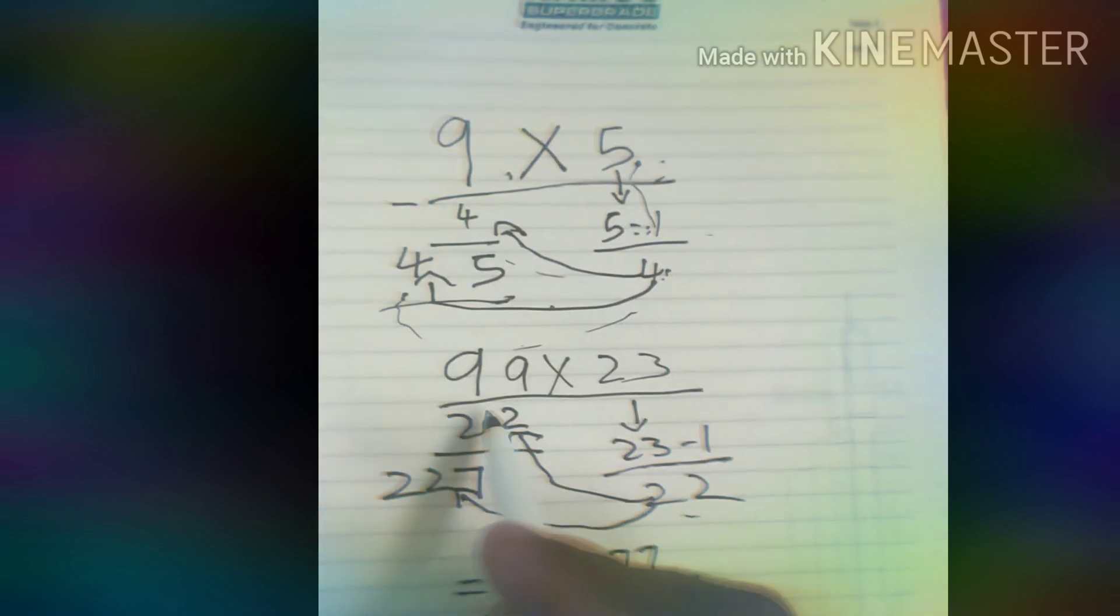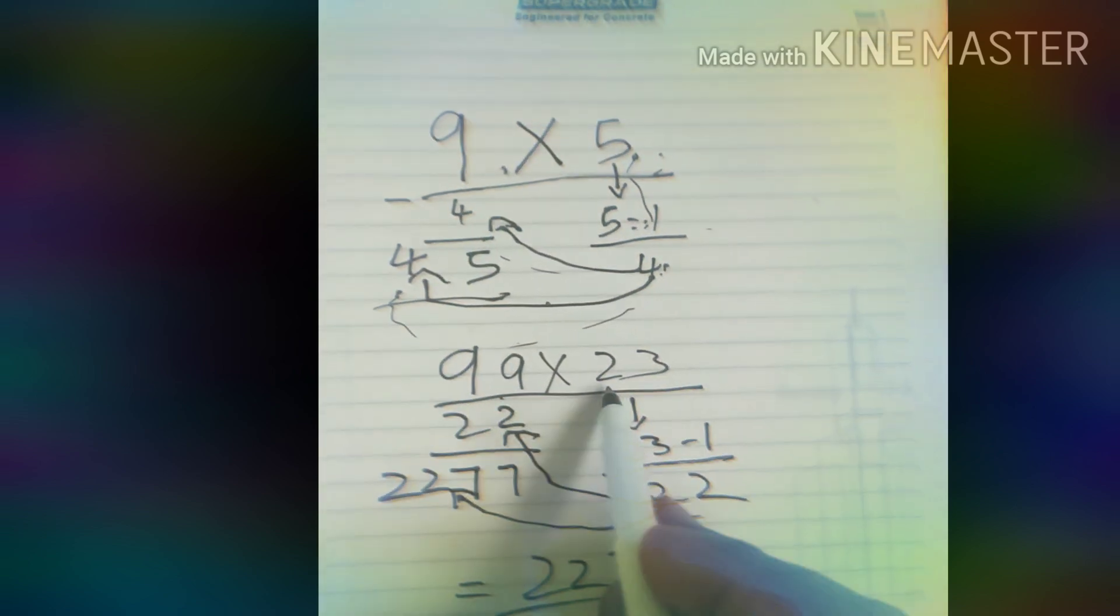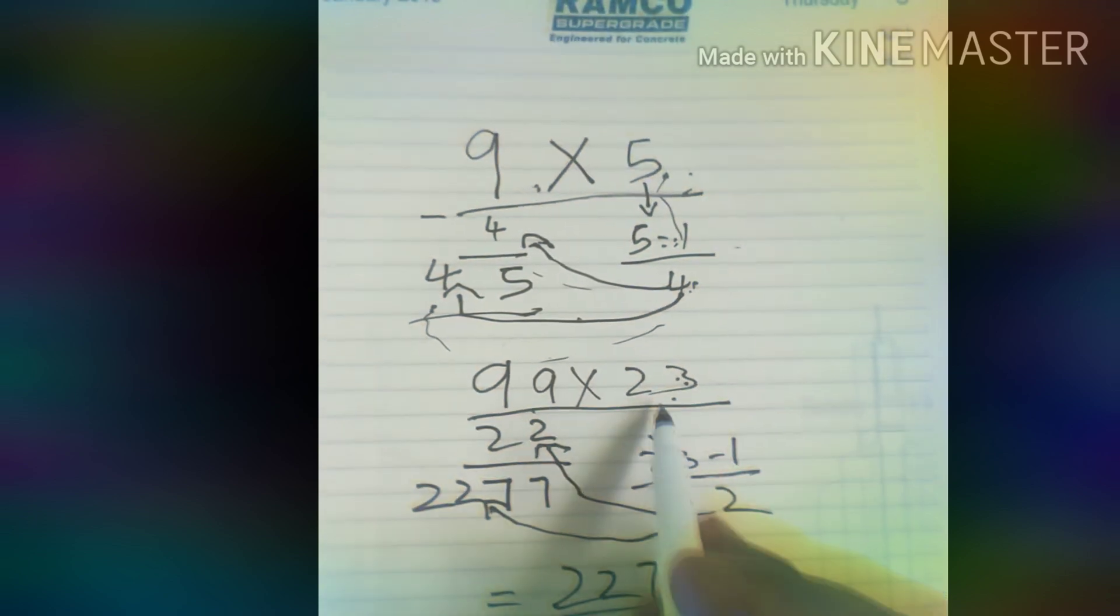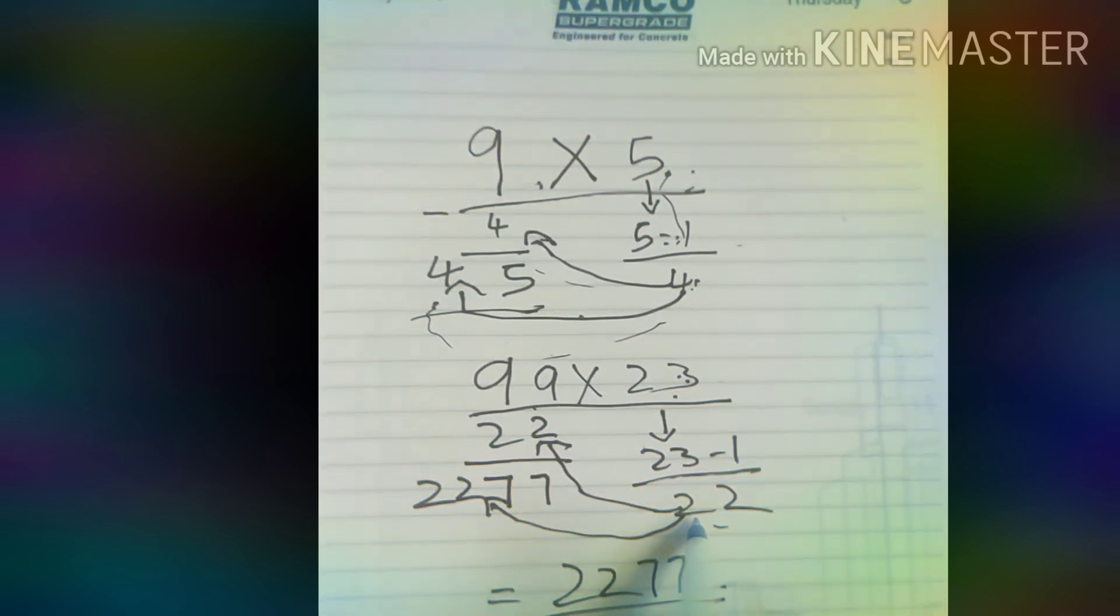For 99 in 2 digits also, we could do easily. Take 23, 23 minus 1 is 22. 22 is carried out.